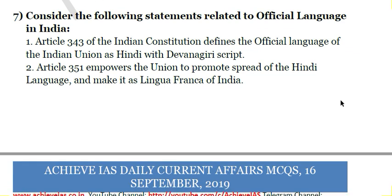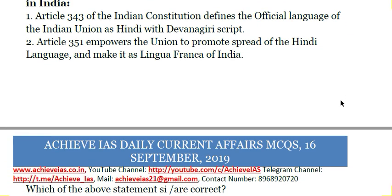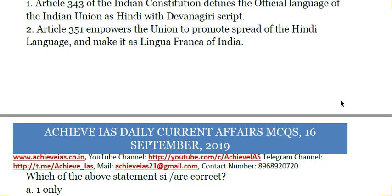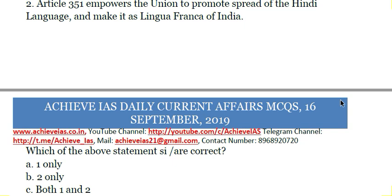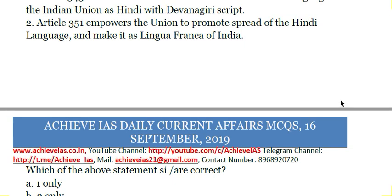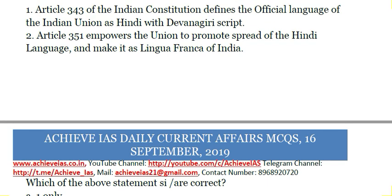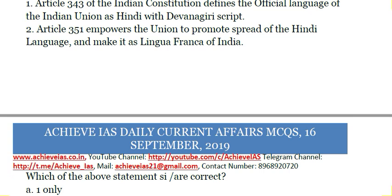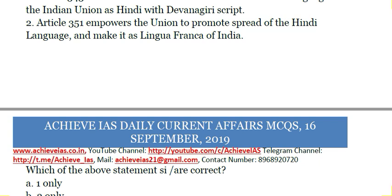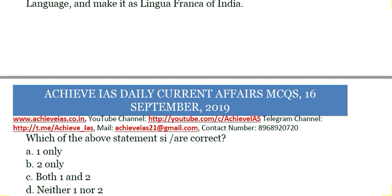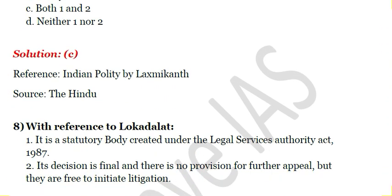Seventh question: Consider the following statements related to the official language in India. First, Article 343 of the Indian Constitution defines the official language of the Indian Union as Hindi with Devanagari script. Second, Article 351 empowers the Union to promote the spread of Hindi. Both statements are correct. Article 343 defines the official language as Hindi with Devanagari script, and Article 351 imposes a duty upon the Union to promote Hindi as a lingua franca of India. The answer is C - both one and two.